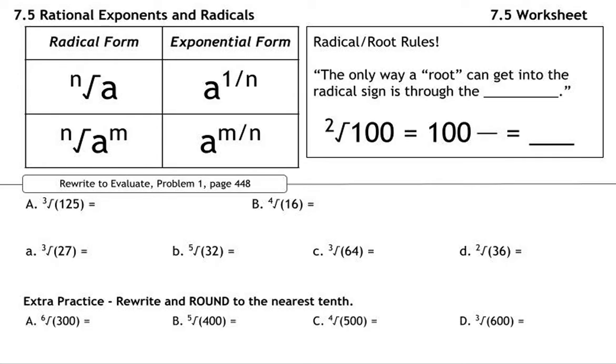Hey, what's going on students? Let's talk about rational exponents and radicals. So basically what we're doing in 7.5 is converting back and forth between radical form and exponential form. And here's how you do that.